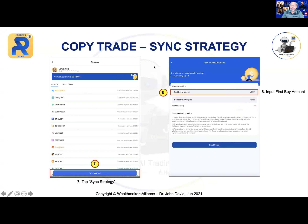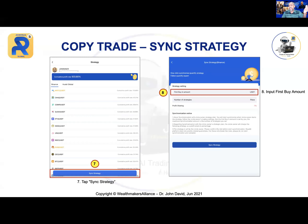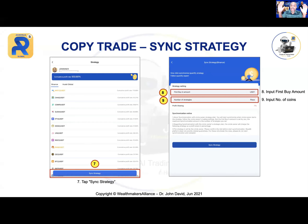On the next page, you will see 'First Buy' — you can put 10, 20, or 50, it's up to you. But you must first understand the instructions in the Telegram group, because they explain wallet management and what profit you want to achieve daily. For example, if you've got 100 dollars it will be 10. The 'Number of Strategies' is actually the number of coins — if you select two coins, two trades will open automatically; three coins, three trades open automatically.